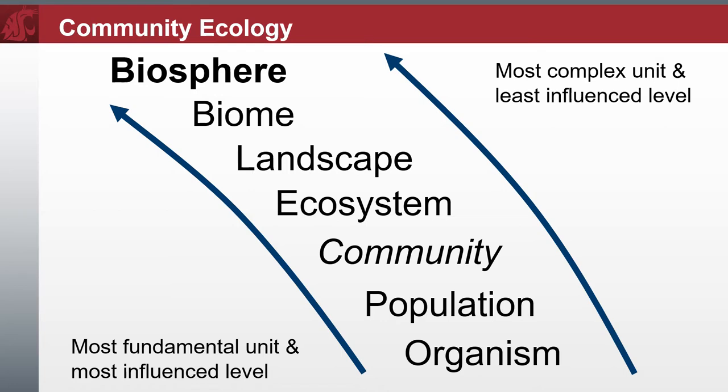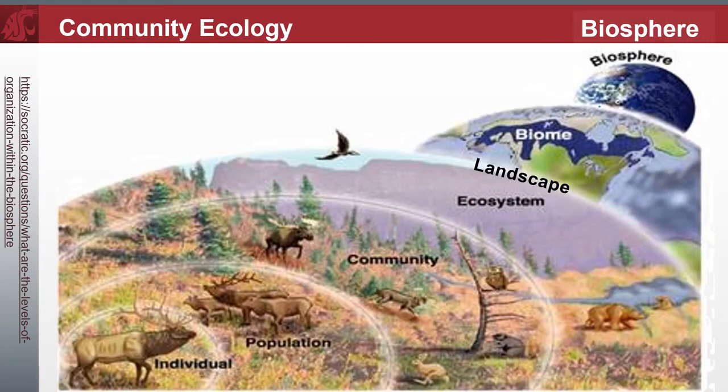Throughout this series, we will revisit this seven-step hierarchy to recognize this interconnectedness. We begin by asking: what are the levels of organization within the biosphere? From smallest to largest, most exclusive to the most inclusive, we have individual, population, community, ecosystem, landscape, biome, and biosphere.